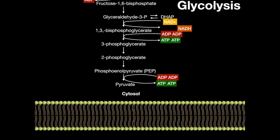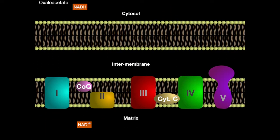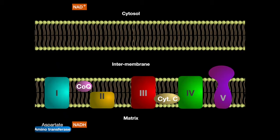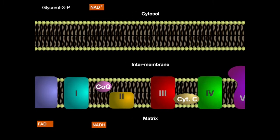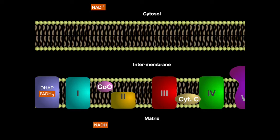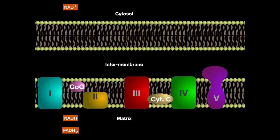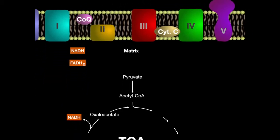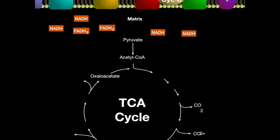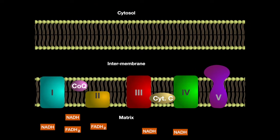NADH generated from glycolysis enters the mitochondrial matrix via the malate-aspartate or the glycerol-3-phosphate shuttle. The TCA cycle occurs in the matrix of the mitochondria, so the NADH and FADH2 don't need to be transported.